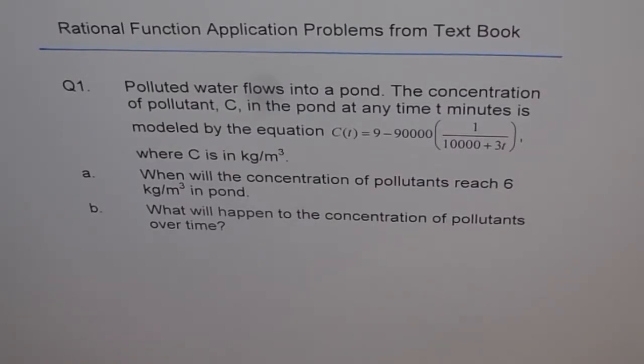Rational Function Application Problem from Textbook. Question 1. Polluted water flows into a pond. The concentration of pollutant C in the pond at any time t minutes is modeled by the equation C(t) equals 9 minus 90,000 within brackets 1 over 10,000 plus 3t, where C is in kilograms per meter cubed. When will the concentration of pollutants reach 6 kilograms per meter cubed in the pond? What will happen to the concentration of pollutants over time?